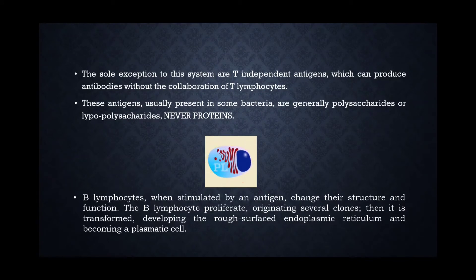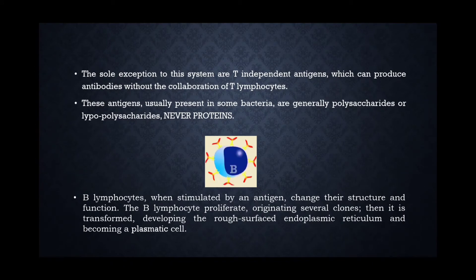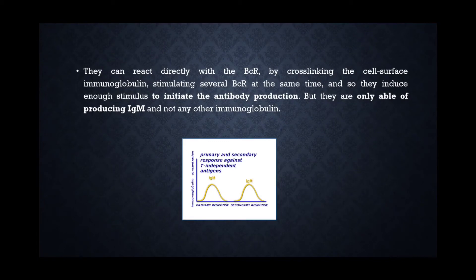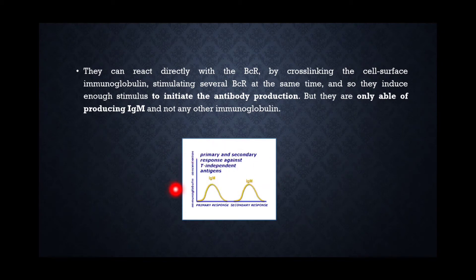B lymphocytes, when stimulated by an antigen, change their structure and function. The B lymphocyte proliferates, originating several clones, then transforms, developing the rough endoplasmic reticulum and becoming a plasmatic cell. They can directly react with the BCRs — B cell receptors — by cross-linking the cell surface immunoglobulins, stimulating several BCRs at the same time. This induces enough stimulus to initiate antibody production, but they are only able to produce IgM, not any other immunoglobulins. The graph shows the primary and secondary response against T-independent antigens, where only IgM is seen in both responses.